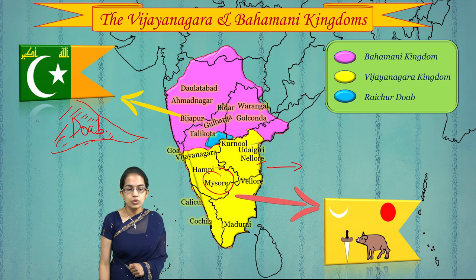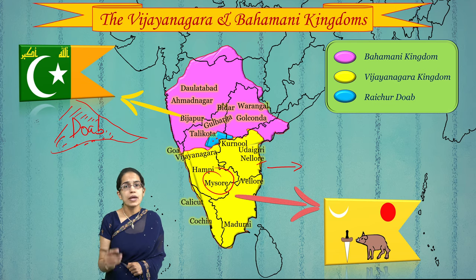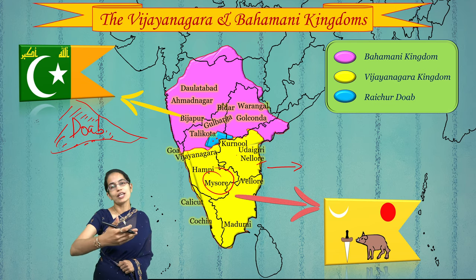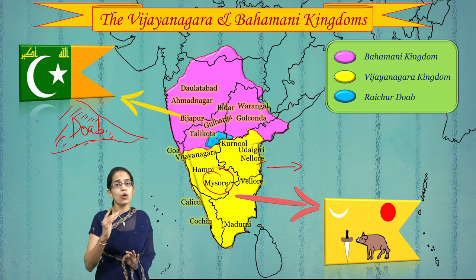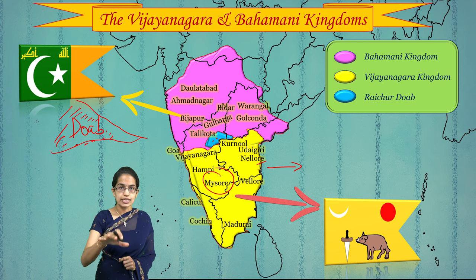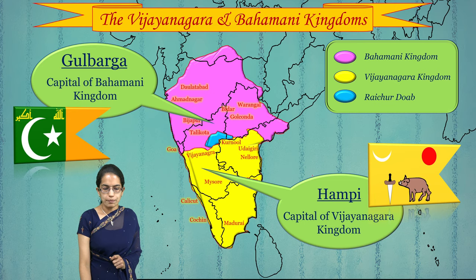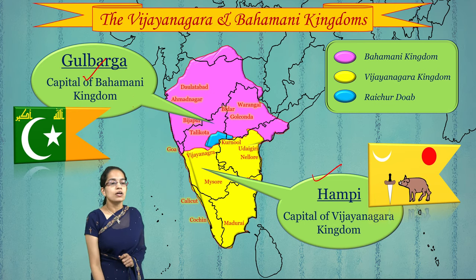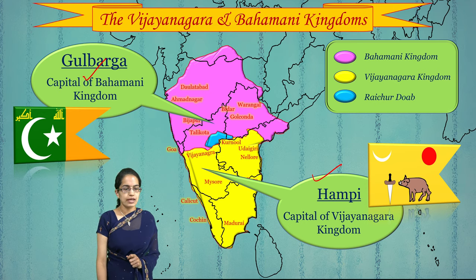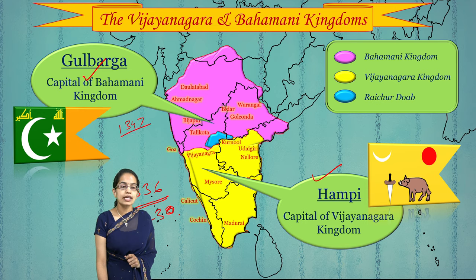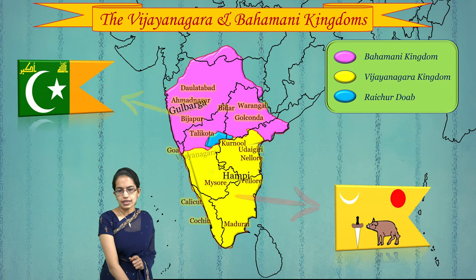The Raichur Doab was one of the most fertile areas and was the main bone of contention between the two kingdoms, sometimes falling under the Bahamani kingdom and sometimes under the Vijayanagar empire, causing constant conflicts. The capital of Vijayanagar was Hampi and the capital of Bahamani was Gulbarga. The Vijayanagar empire was established in 1336 and lasted nearly 230 years, while the Bahamani kingdom came slightly later in 1347 and lasted nearly 180 years.